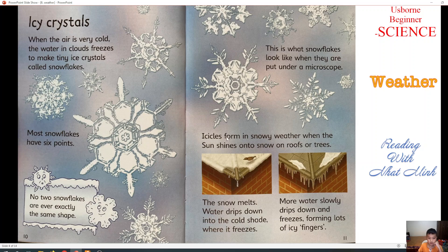Ice crystals form in snowy weather. When the sun shines onto the snow on roofs or trees, the snow melts. Water drips into a cold shade where it freezes. More water slowly drips down and freezes, forming lots of icicles.